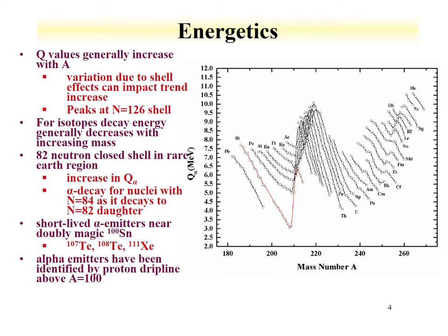There are also some shell effects that we see with this Q value. We see peaks at N = 126, and also alpha decay near the 82-neutron closed shell, which is found in the lanthanides. We get an increase in the Q value there — since we get an increase in the alpha decay energy, the alpha half-life decreases, so we can see some competition between alpha decay and other modes of decay. There are also some short-lived alpha emitters near doubly magic Z=100.